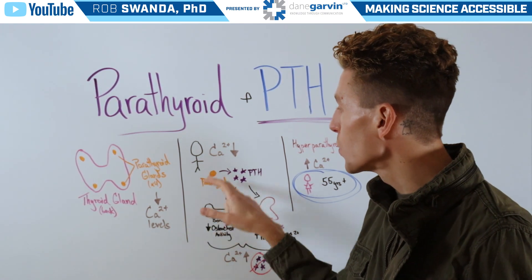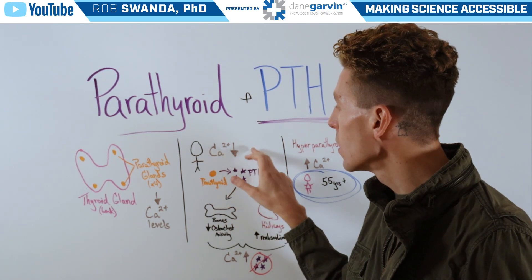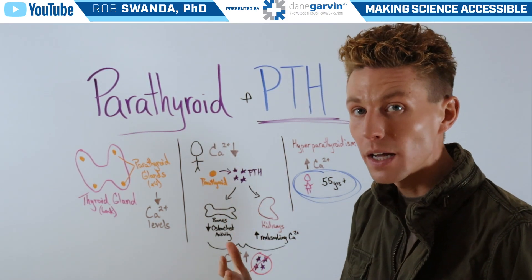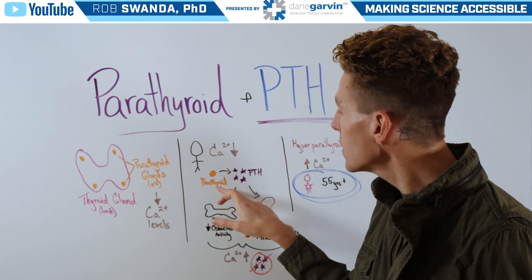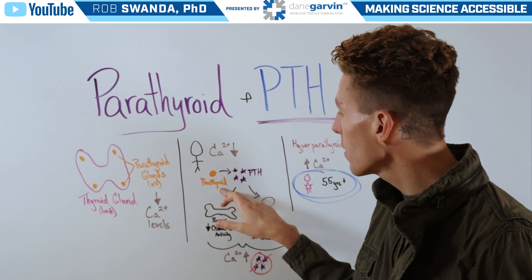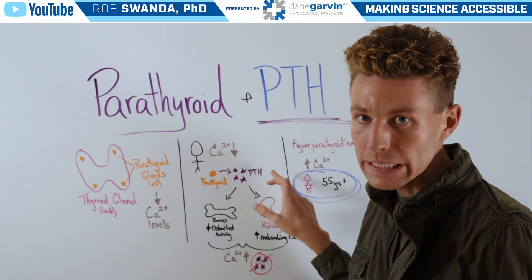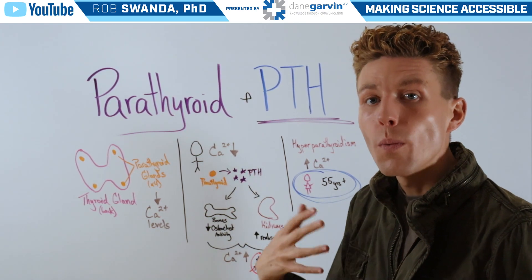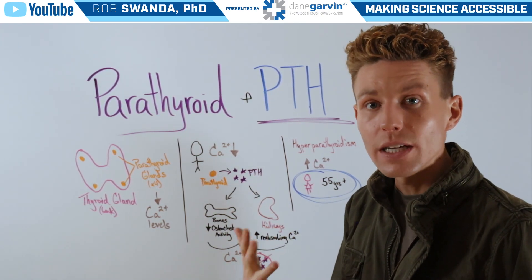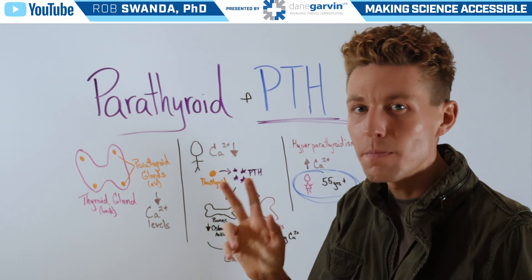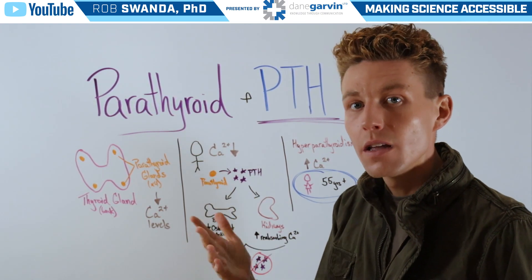So if an individual is experiencing low levels of calcium in their blood, that's going to signal the parathyroid gland to release PTH. When PTH is released, that's going to have two main effects.